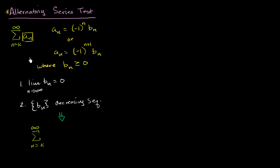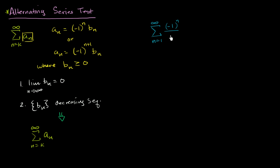This might seem a little bit abstract right now. Let's actually use this with an actual series to make it a little bit more concrete. Let's say I had the series from n equals one to infinity of negative one to the n over n.